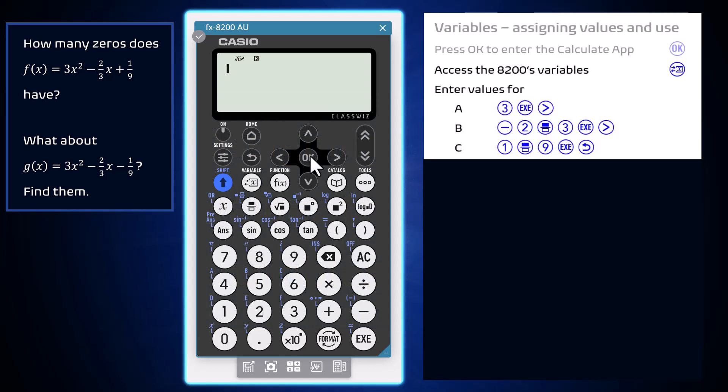To access the 8200's variables, press the Variable key. Enter 3 and press Execute to assign this value to A. Any existing value assigned to A will be overwritten.